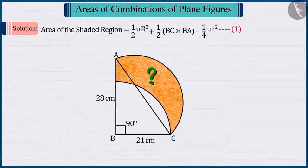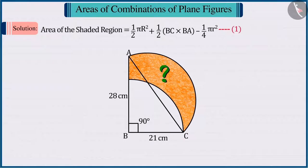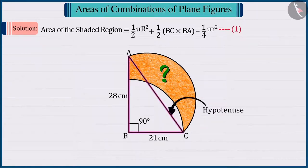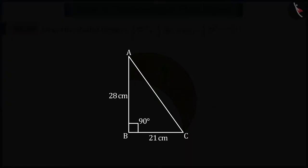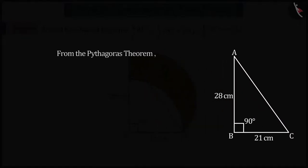Looking at the figure carefully, we can say that the diameter AC of the semicircle is the hypotenuse of the right-angled triangle ABC. Therefore, using the Pythagoras theorem in the right-angled triangle ABC,